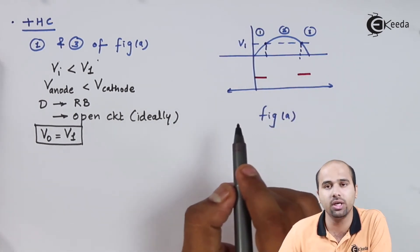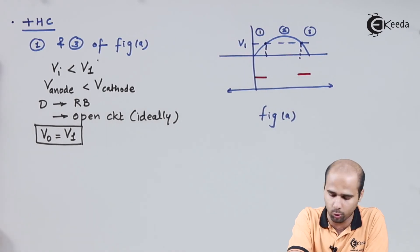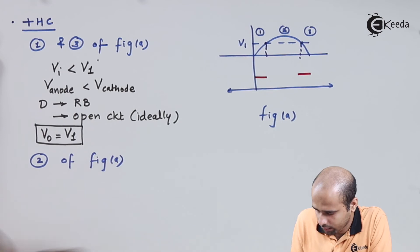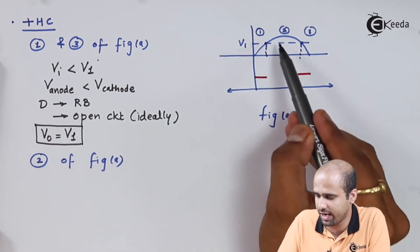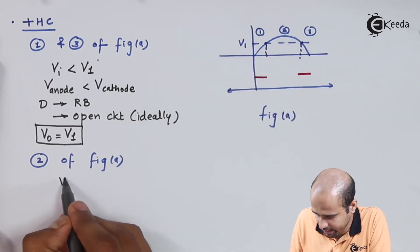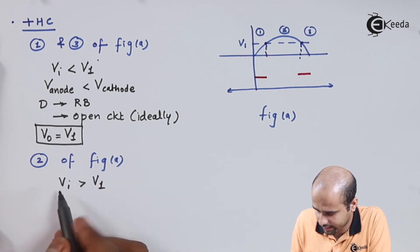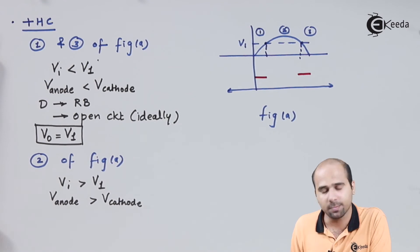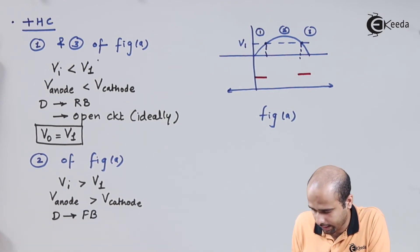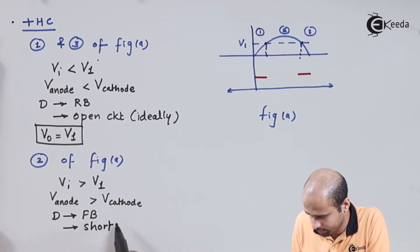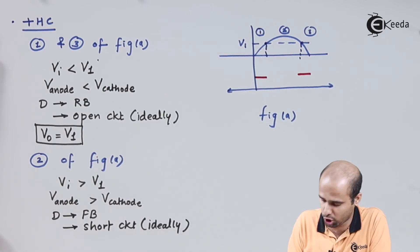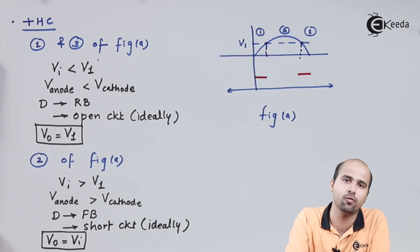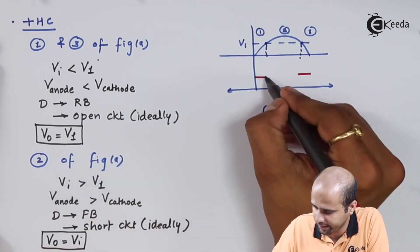Now we will understand what will be the value in the remaining portion, that is the second portion of the positive half cycle. In this second part, VI is greater than V1 — exactly the opposite situation. VI is greater than V1, so the value of anode is positive with respect to the value of cathode. Then the diode will become forward biased and will give you a short circuit. As this gives you a short circuit, we can say input is same as output. So the output is following the input for a part of the positive half cycle, not the complete positive half cycle.